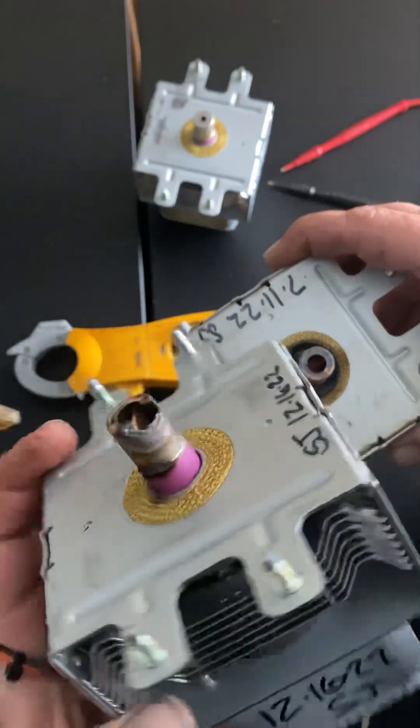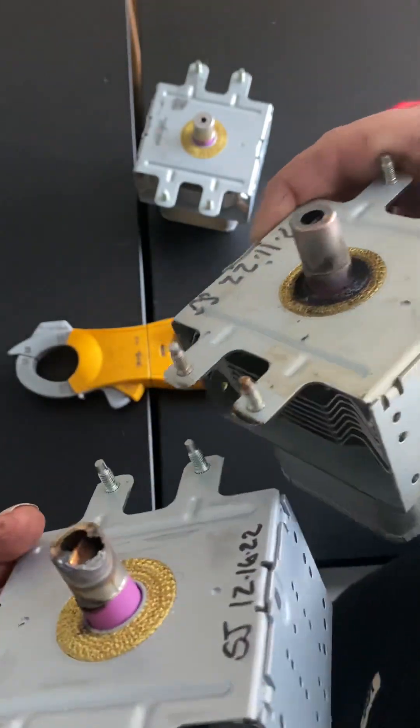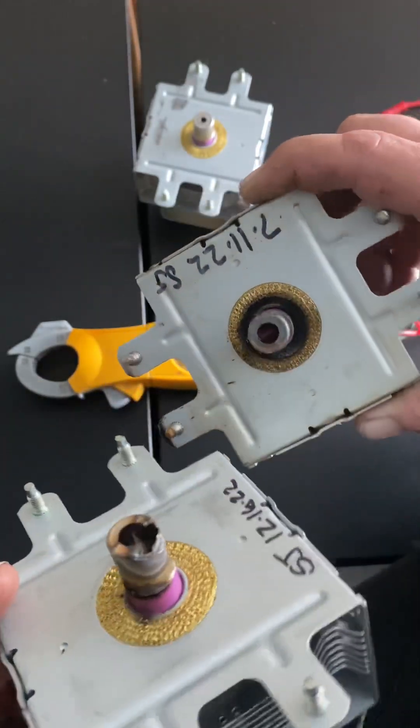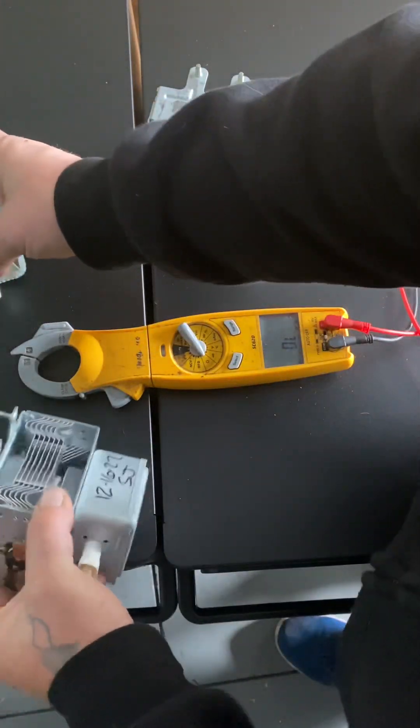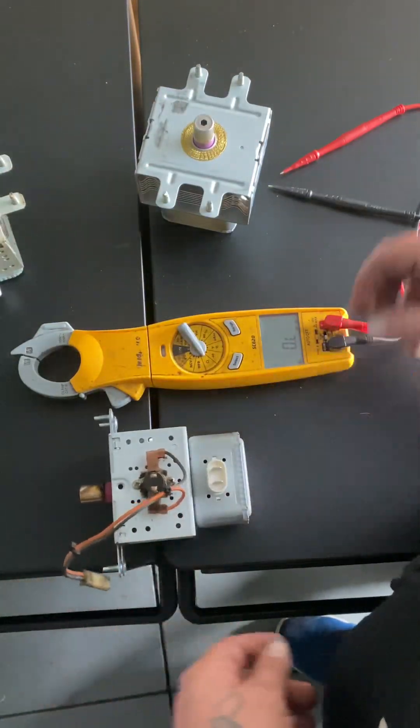So this one in my hand is damaged from arcing. I mean, they're both damaged from arcing. So yeah, anyways, that's how you test the microwave magnetron.